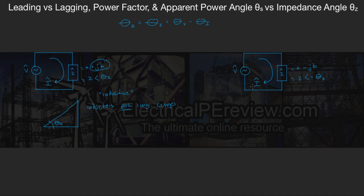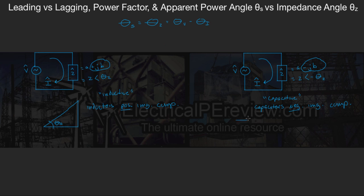What does this mean? In the first circuit, our impedance angle is positive, so our apparent power angle must also be positive — since they're one and the same. If we draw our power triangle, theta S is positive. We call this an inductive load, because inductors have a positive imaginary component — our j term is positive. Another term for inductive is lagging — we call this a lagging circuit.